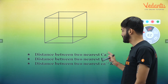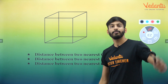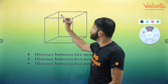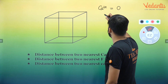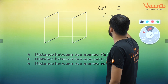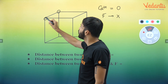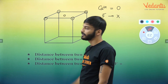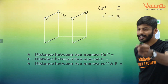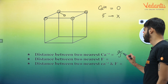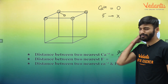Ca²⁺ crystallizes in an FCC fashion, so it will be present at the corners and the face center. I represent Ca²⁺ with a circle and F⁻ with a cross. Ca²⁺ will be present at all corners and at all face centers. If I ask you the distance between the two nearest calcium ions, the answer is a/√2. I hope you followed the previous session.